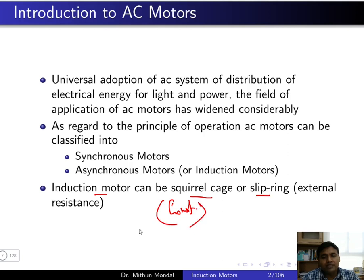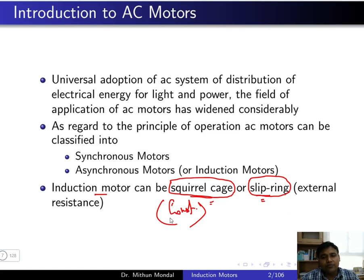Asynchronous induction motors can be of two types based on construction: squirrel cage induction motor and slip ring induction motor. The key difference is that external resistance can be added in a slip ring induction motor, whereas no external resistance can be added in a squirrel cage induction motor.